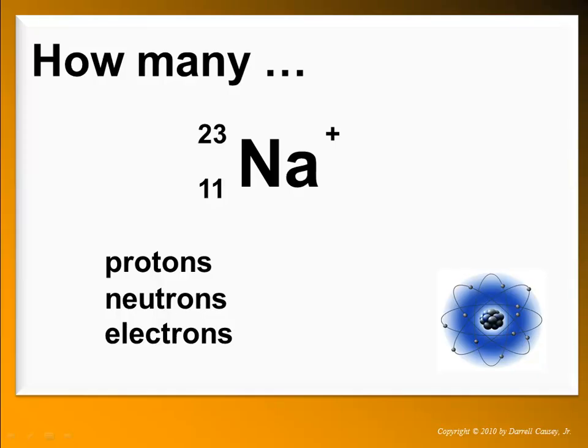There's a sodium ion and we realize that it's a cation. It has a positive charge. And we want to know how many protons, neutrons, and electrons. So if you look at that, the atomic number tells us there's 11 protons. If you take 23 and minus 11, that's going to give you your neutrons. Neutrons will be your mass number minus your protons.